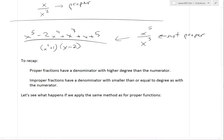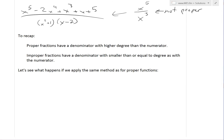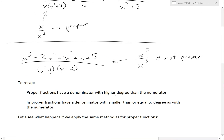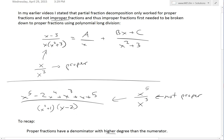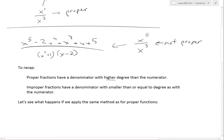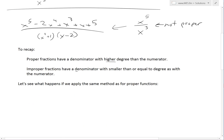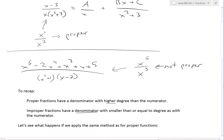To quickly recap: a proper fraction has a denominator with a higher degree than the numerator — in this case, degree 3 versus degree 1. An improper fraction has a denominator with a degree smaller than or equal to that of the numerator — in this case, 3 is smaller than 5.